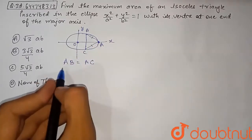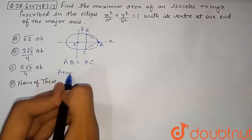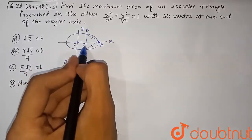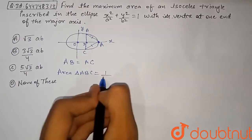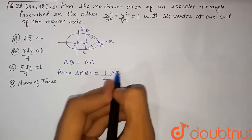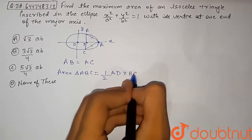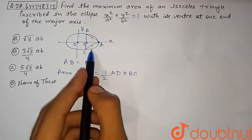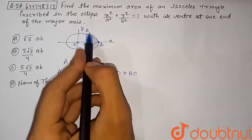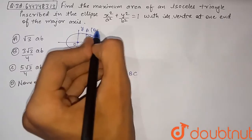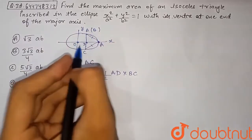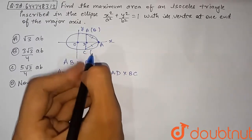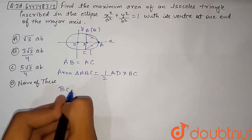To find the area of triangle ABC, we need the base BC and the height AD, where D is the foot of the perpendicular from A onto BC. So area = ½ × AD × BC. We introduce parameter θ for point B on the ellipse.